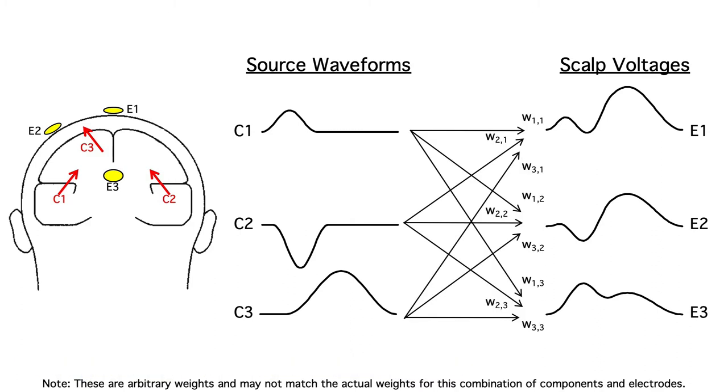There's a different weighting between each component and a given electrode, reflecting the location and orientation of the dipole, the location of the electrode, and the conductivity of the brain, meninges, skull, and scalp. For example, there's one weight between component one and electrode one, and another weight between component two and electrode one, and a third weight between component three and electrode one. You have a different weight for each combination of component and electrode site.